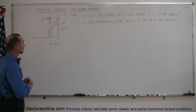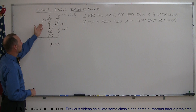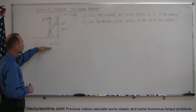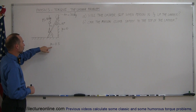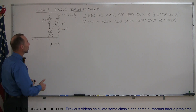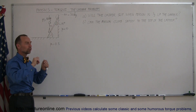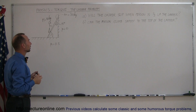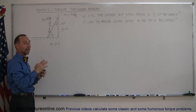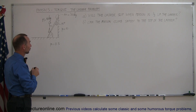Let's assume we have a ladder that has a mass of 30 kilograms, a person with a mass of 80 kilograms climbing up the ladder, and there's friction on the floor, so the coefficient of friction between the floor and the ladder is 0.3. Assuming that there's no friction against the wall — typically the walls are smooth and the ladder can very easily slide along the wall — and the ladder is placed at an angle of 15 degrees with the vertical.